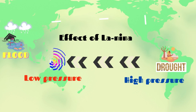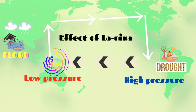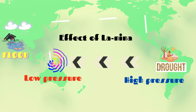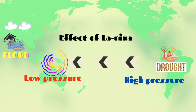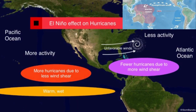During La Niña, we often see a strengthening of the trade winds and cooler ocean temperatures in the tropical Pacific, especially in the western part of the Pacific Ocean. India and South Asian countries receive increased rainfall and flooding, while on the opposite side, countries in South America like Peru and Chile experience drought. La Niña can also lead to an increase in hurricane activity in the Atlantic basin.